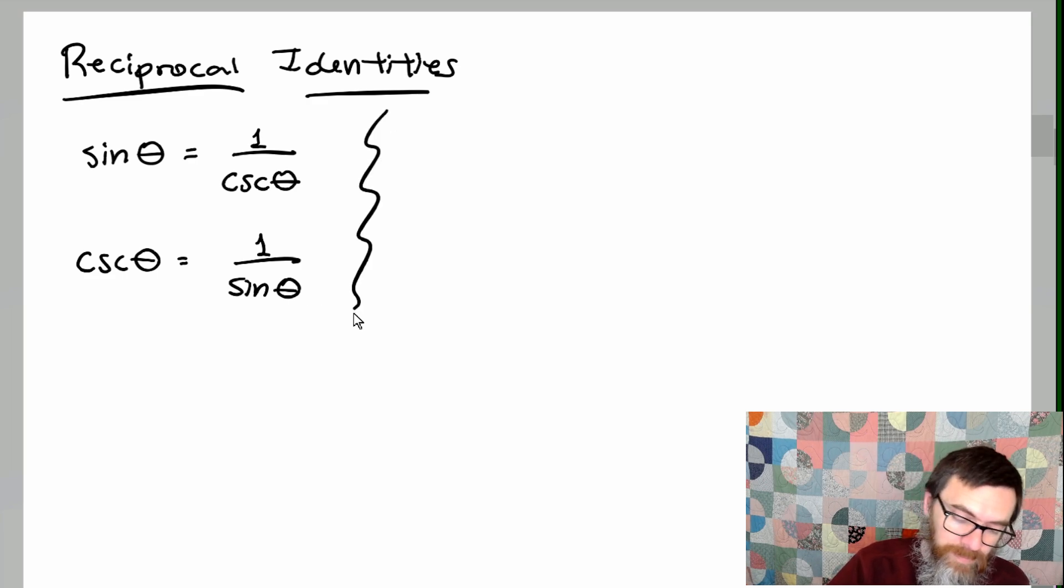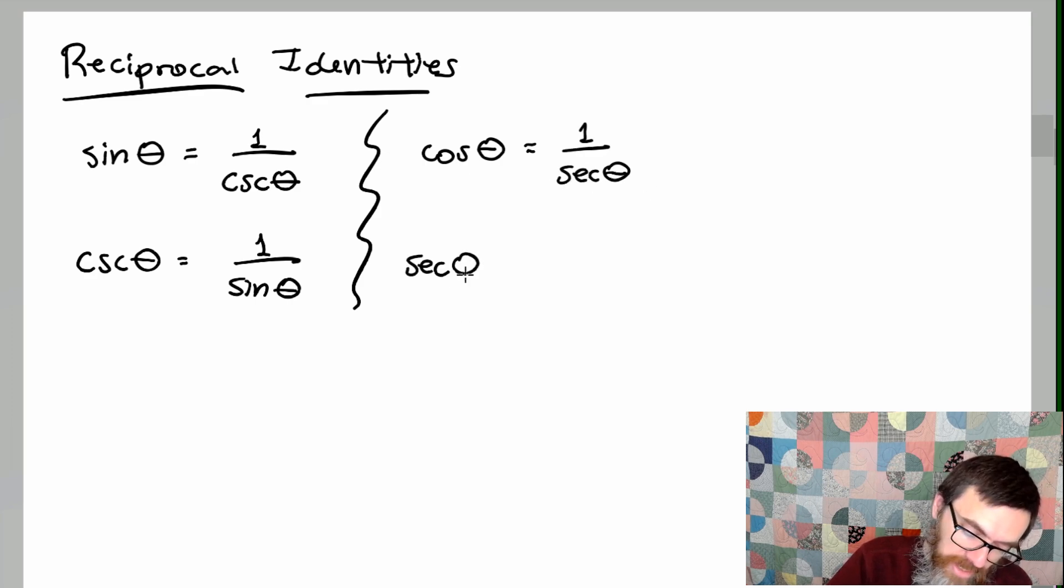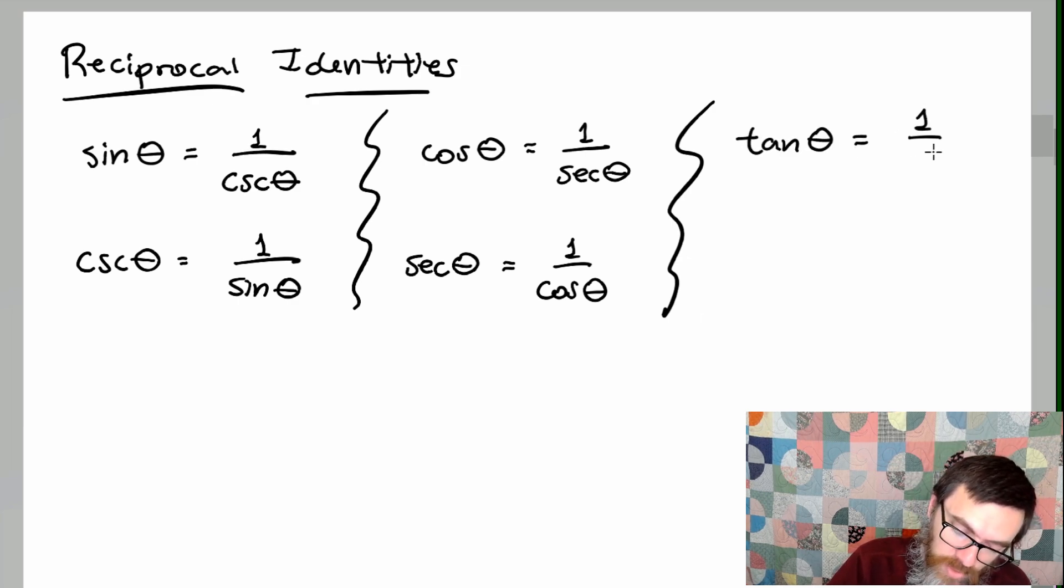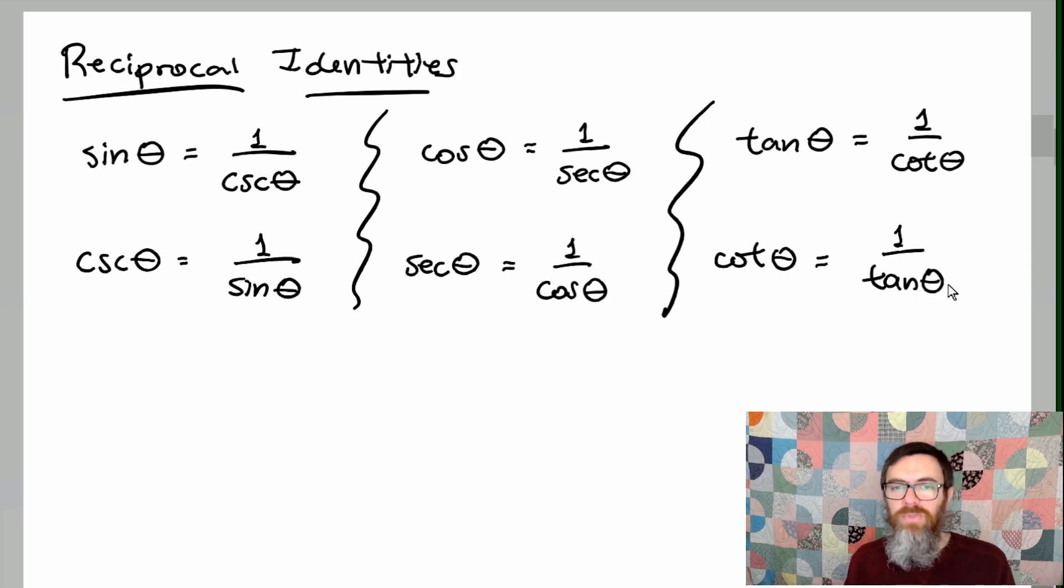So these are going to go together in terms of reciprocal identities, and then cosine is the reciprocal of secant and secant is the reciprocal of cosine. Tangent and cotangent are reciprocals of each other. This is the same stuff that we're talking about in the last few videos. Now one thing to be very careful about, and this just kind of goes back to really bad memories that I have when I was first learning this stuff, is you've got to be careful.